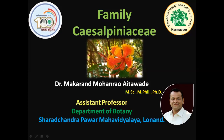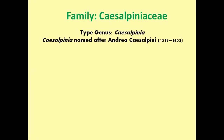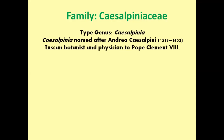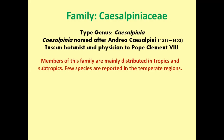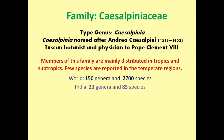Today we are going to discuss family Caesalpiniaceae. The name Caesalpiniaceae is given after its type genus Caesalpinia. Caesalpinia is named after Andrea Caesalpini, who was a Tuscan botanist and physician to Pope Clement VIII. Members of this family are mainly distributed in tropics and subtropics. Few species are reported in the temperate region. In the world, the family is represented by 150 genera and 2700 species. In India, it is represented by 23 genera and 85 species.